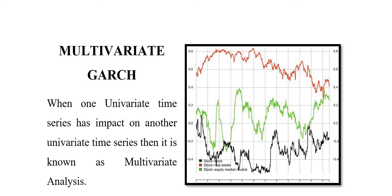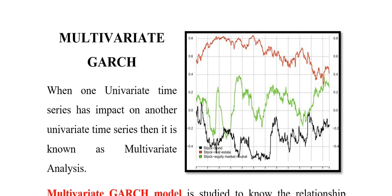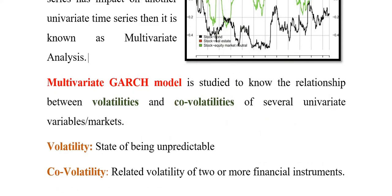When one univariate time series has an impact on another univariate time series, it is known as multivariate analysis. Now, in multivariate GARCH, it has been observed that in finance or economics, volatility — also known as risk — moves together over time across assets in the market. That is, the volatility or risk of one time series can have an impact on another time series. For example, volatility in exchange rates can affect returns in the stock market, or a change in returns of one stock market can affect other stock markets.